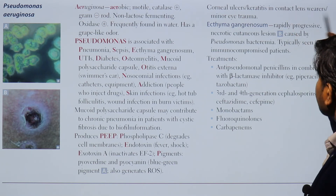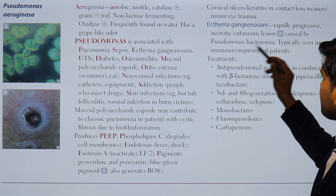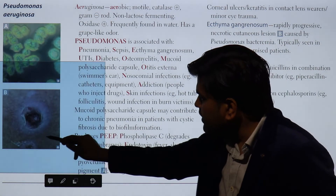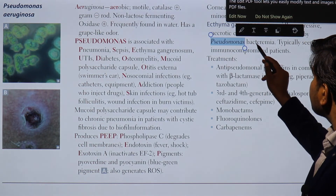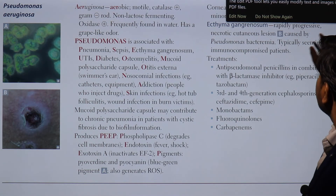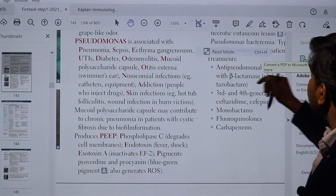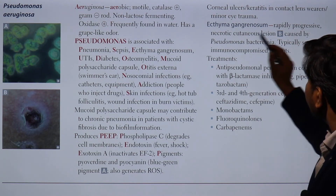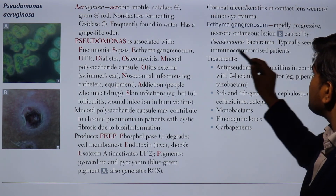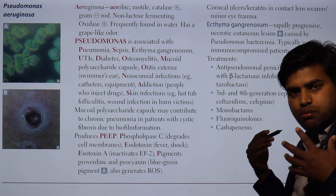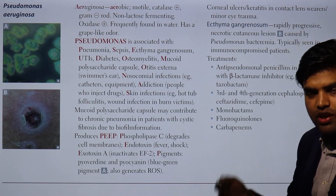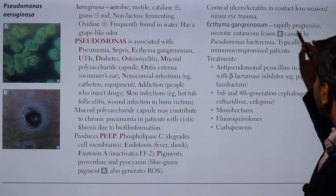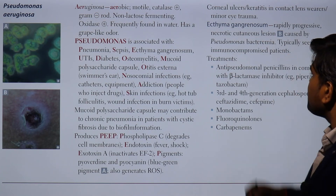Pseudomonas can cause corneal ulcer or keratitis in contact lens wearers or those with minor eye trauma. Ecthyma gangrenosum is a characteristic feature of Pseudomonas bacteremia — it is a rapidly progressive, necrotic cutaneous lesion caused by Pseudomonas bacteremia, typically seen in immunocompromised patients.